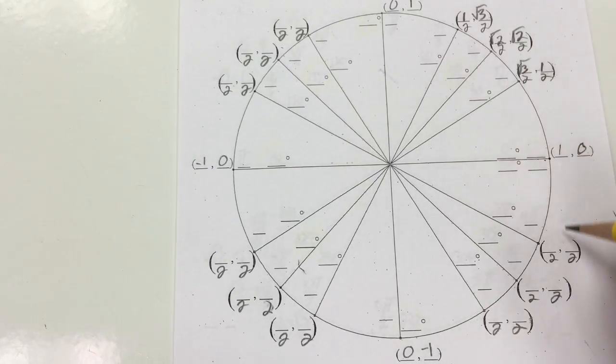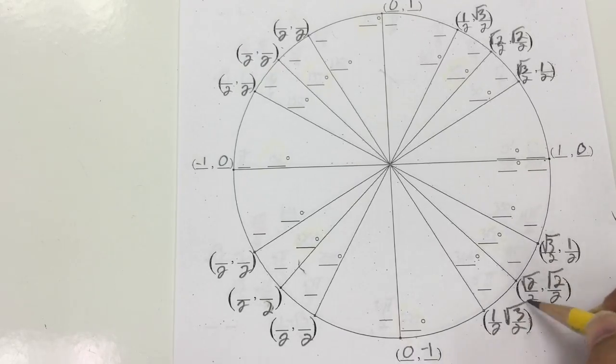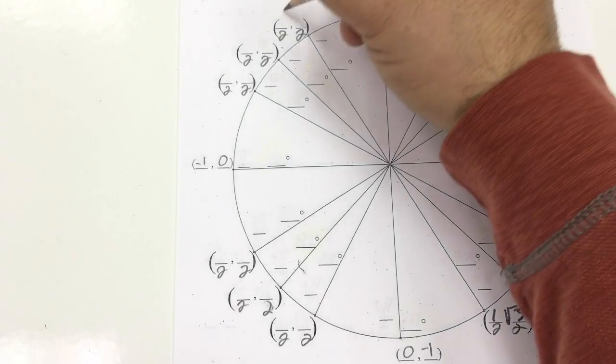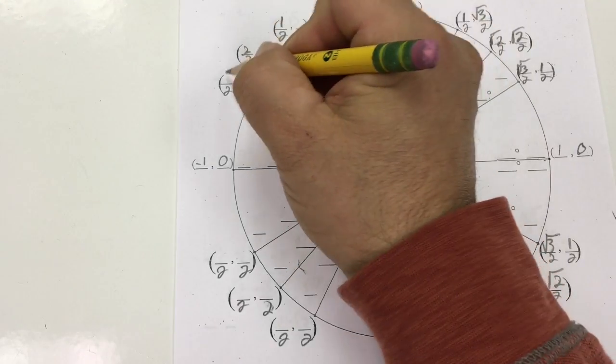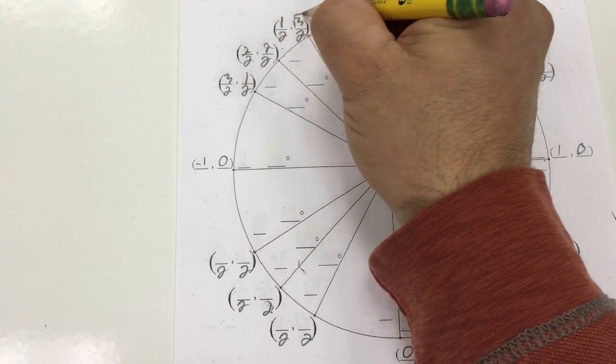This one drops down: 1, 2, 3, 1, 2, 3. Square root everything but the ones. This here, one slides over to this side: 1, 2, 3, 1, 2, 3. Square root everything but the ones.